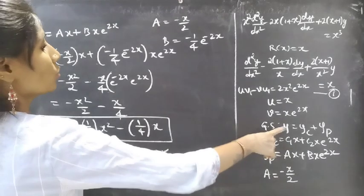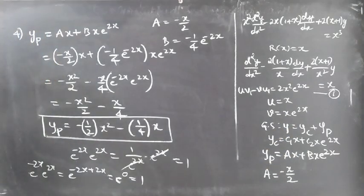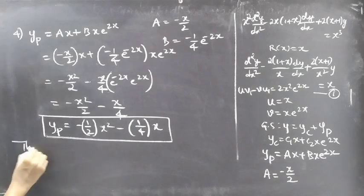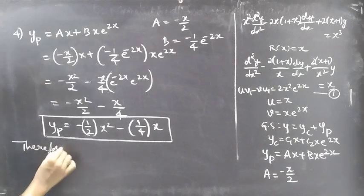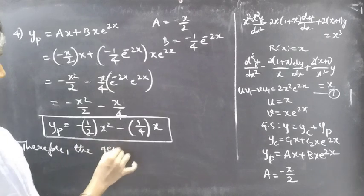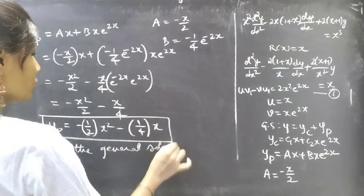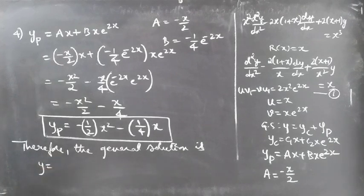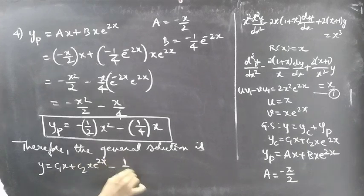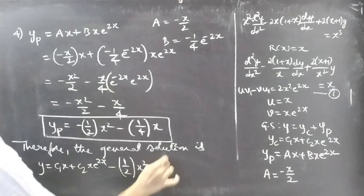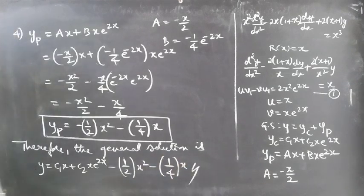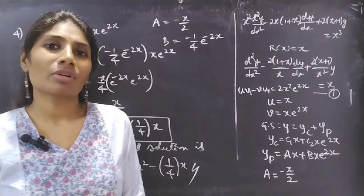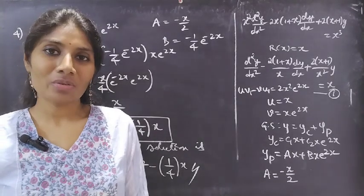The general solution is y = yc + yp. Therefore y = c₁x + c₂xe^(2x) − (1/2)x² − (1/4)x. This completes the problem. I hope you understood. We'll see you in the next video — until then, bye bye.